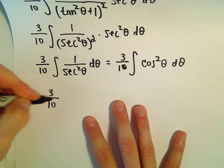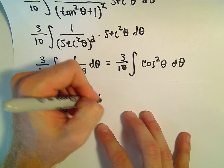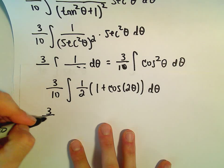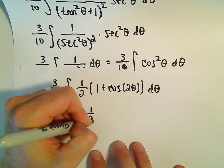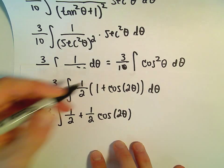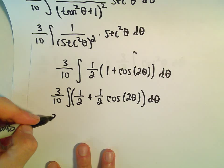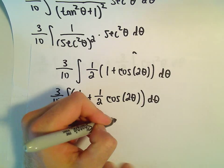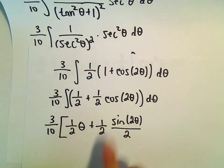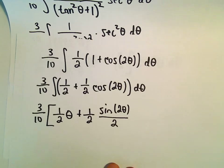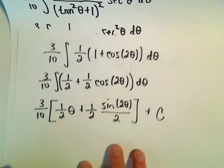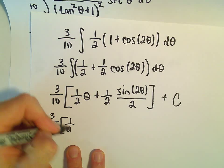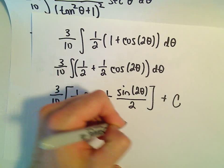Since 1 over secant squared is cosine squared theta, we're back to a trig integral. To integrate cosine squared, we use the identity: cosine squared theta equals 1 half times 1 plus cosine of 2 theta. Distributing gives 1 half plus 1 half cosine 2 theta. Integrating, we get 3 over 10 times 1 half theta plus 1 half times sine of 2 theta over 2, which simplifies to 3 over 10 times 1 half theta plus 1 fourth sine of 2 theta, plus c.